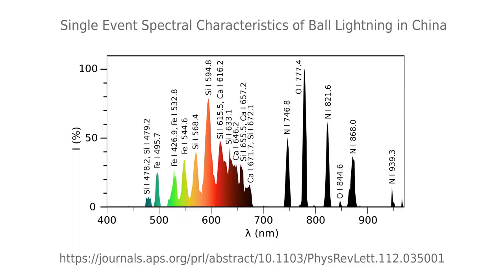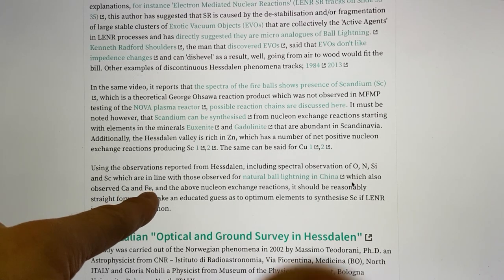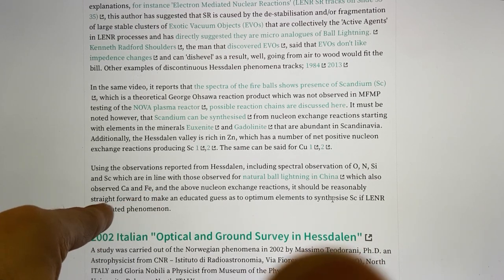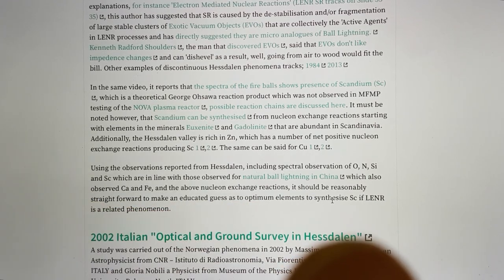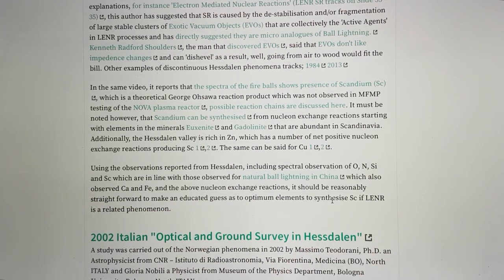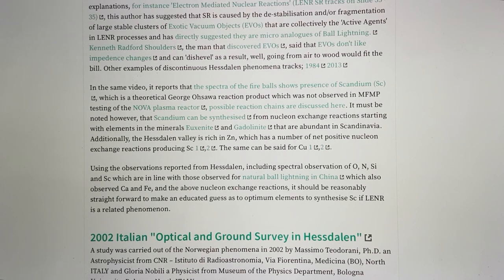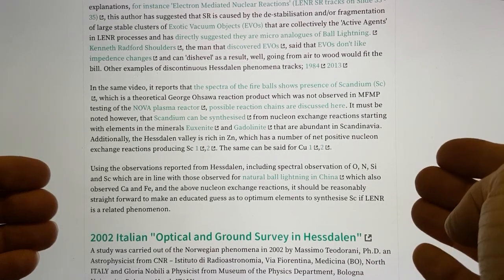I'll just show you an example for copper here. So there's a whole bunch of reactions here that start off with, say, calcium and copper goes to scandium and nickel, or argon and copper goes to scandium and nickel. So copper could form part of this sort of production of scandium process. Using the observations reported from Hessdalen, including spectral observations of oxygen, nitrogen, silicon and scandium, which are in line with those for natural ball lightning. It's a study of ball lightning that was captured by some Chinese. There's a spectrum which you can actually find on Wikipedia, including oxygen, nitrogen, silicon and so forth. They've also observed calcium and iron. Using the above nucleon exchange reactions, it should be noted that it's reasonably straightforward to make an educated guess as to the optimum elements to synthesize scandium if LENR is a related phenomena.